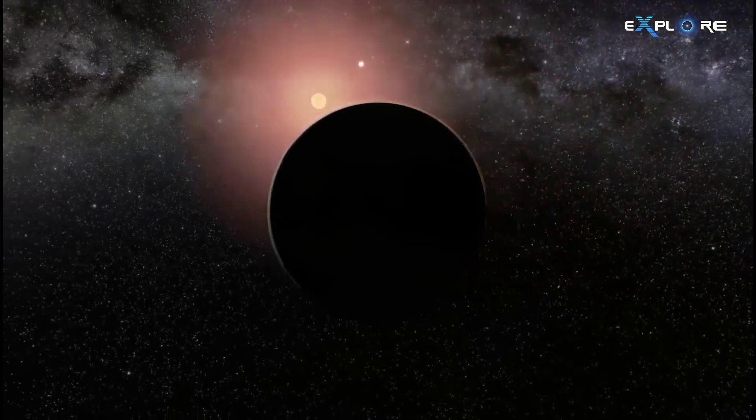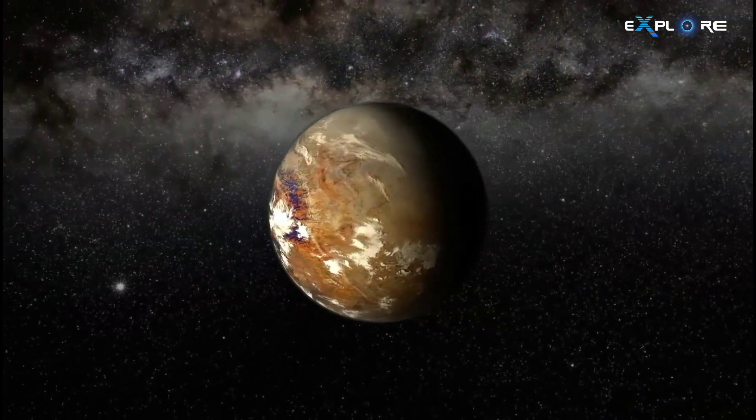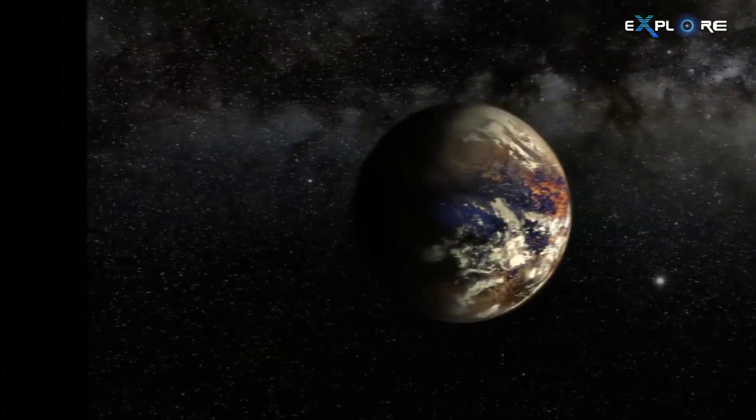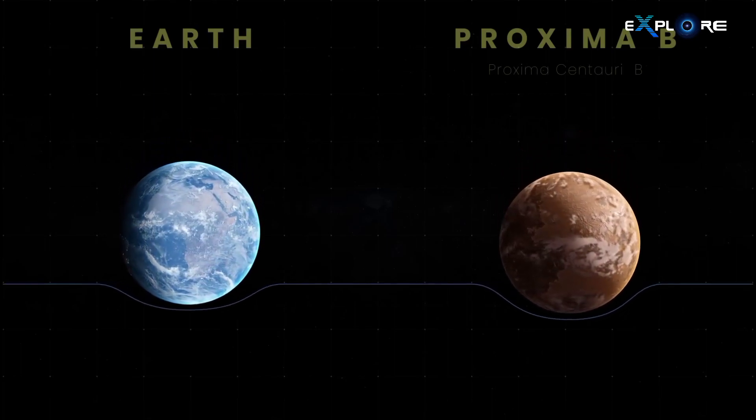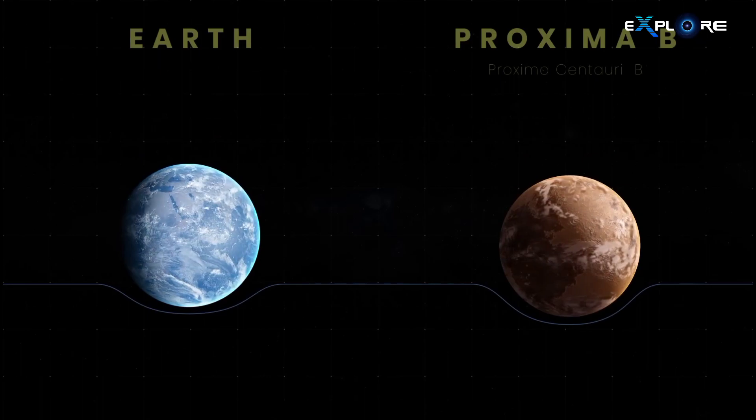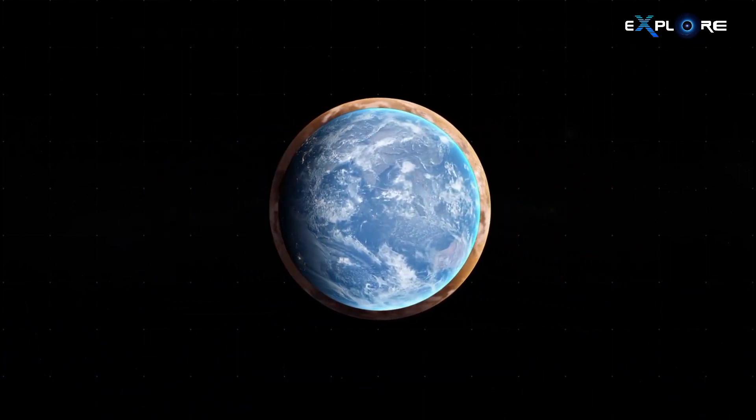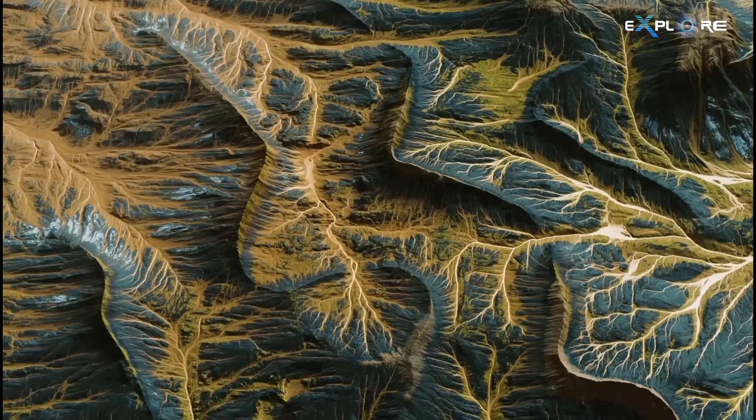Proxima B, upon closer examination, reveals remarkable similarities to our home planet. It boasts a mass approximately 1.3 times that of Earth, a radius comparable to Earth's, and a density hinting at a rocky composition.